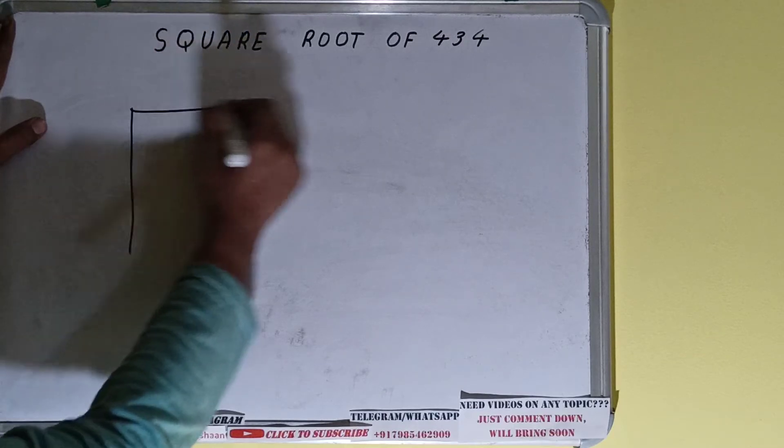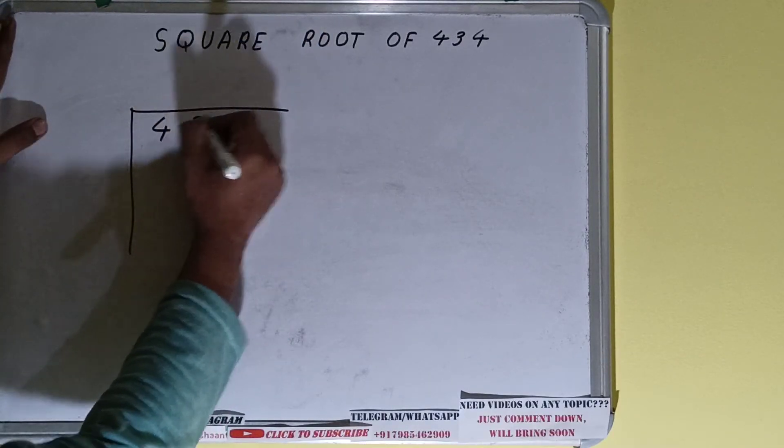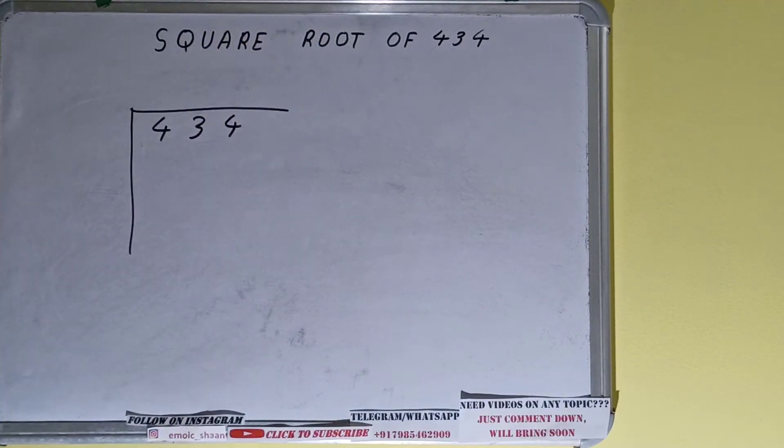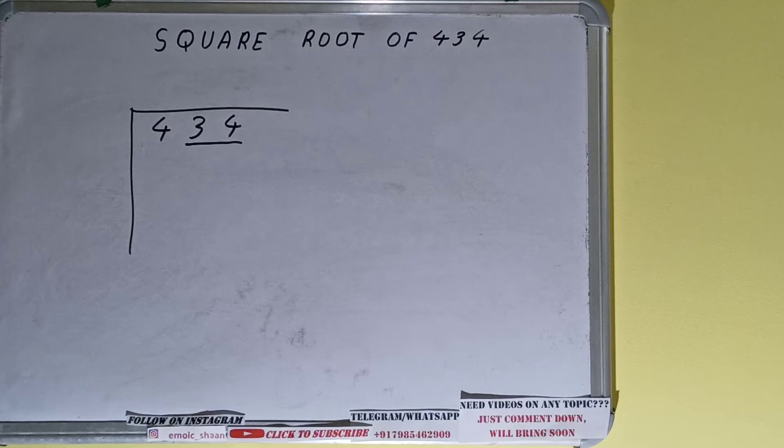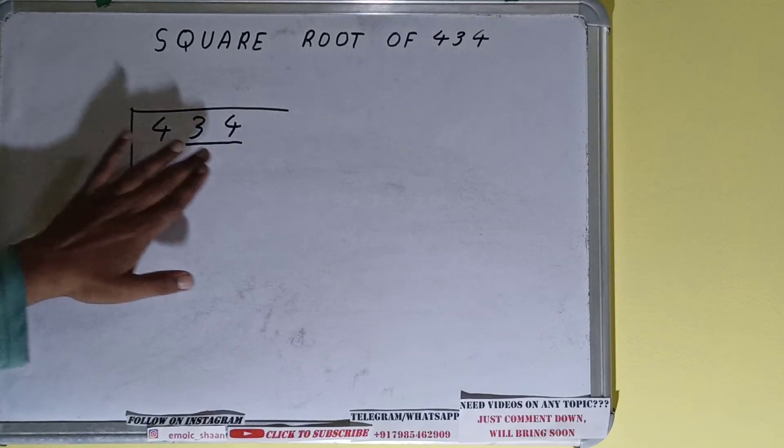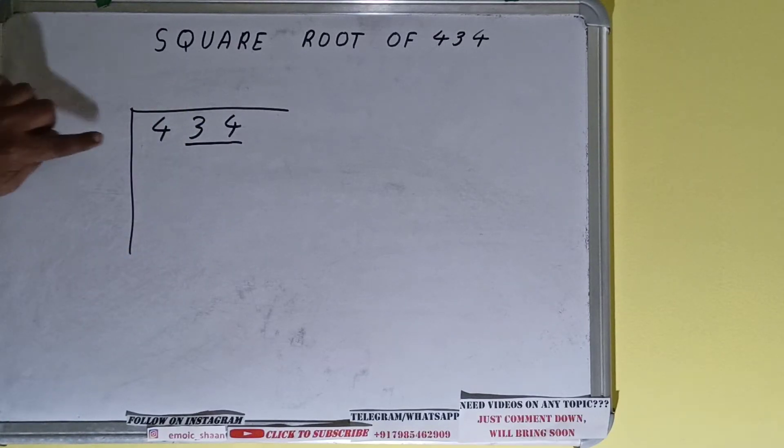First we need to write the number like this. Next, we need to form pairs from the right-hand side. Only one pair can be formed and this 4 will be left alone. First we'll divide this 4, then we'll bring down the pair. The rule is: whatever number we write here, we have to write here also.